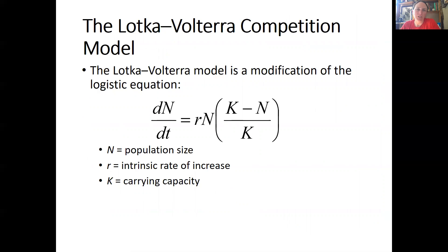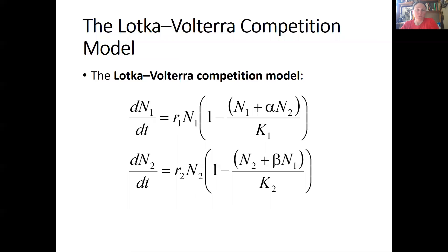The Lotka-Volterra competition model is a modification of the logistic equation, where N is population size, r is the intrinsic rate of increase, and K is the carrying capacity. You create two versions of the model, one for each species in a two-species competition system. You add a term — alpha times N2 — representing the effect of species two's population size times a competition coefficient. Similarly, species two's equation includes a beta times N1 term, so each population's dynamics depend on both the competition coefficient and the other population's size.